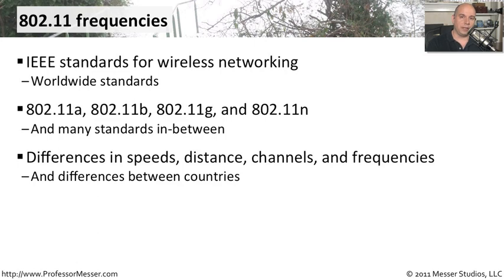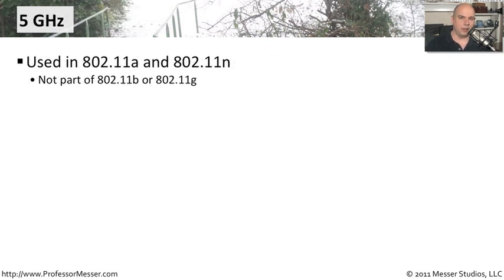As you go from country to country, there are also a number of differences. The focus of this video will be to give you an overview of all of those, and perhaps show you in the United States where we happen to use some of those frequencies. Let's start at the 5 GHz range, which is primarily used in 802.11a and 802.11n. The 5 GHz frequencies were not part of the standards for 802.11b or 802.11g.